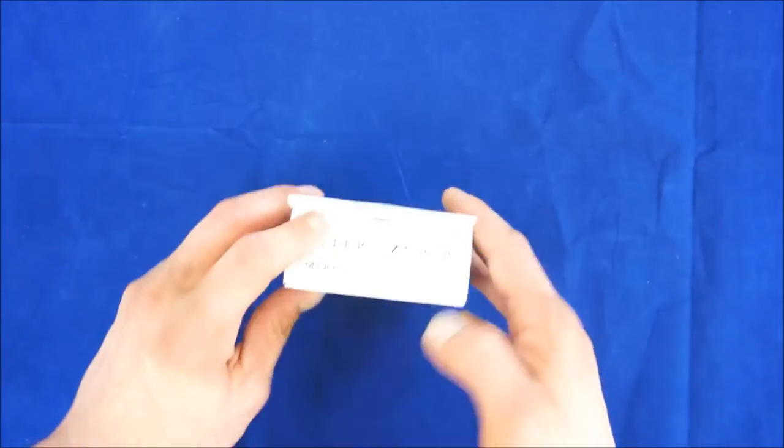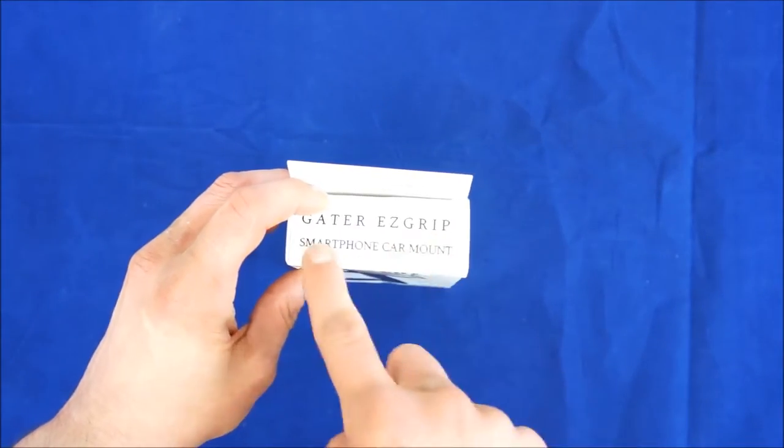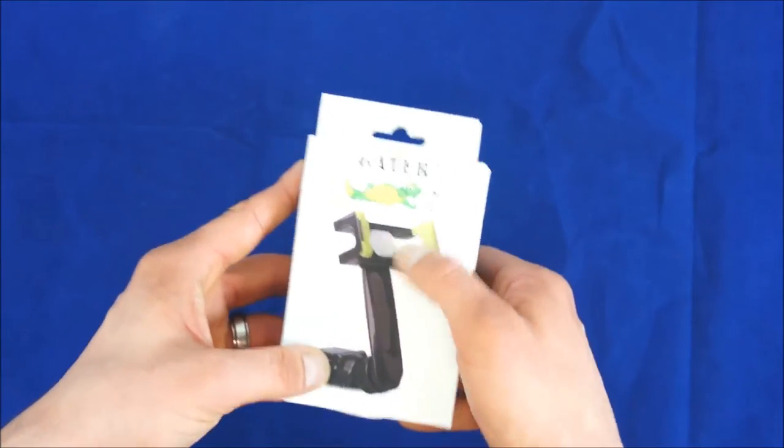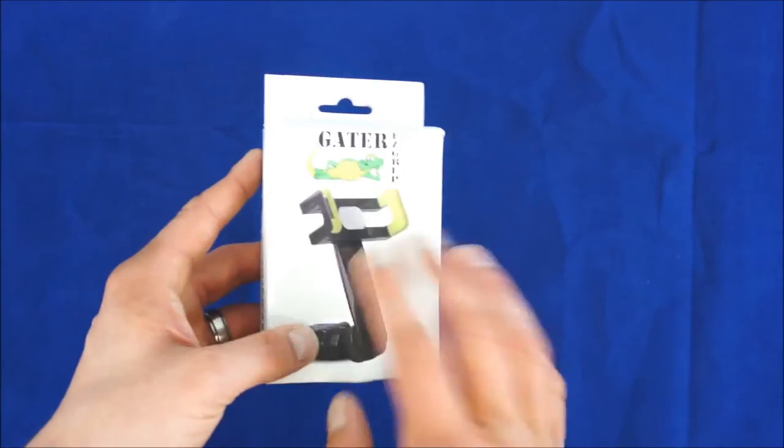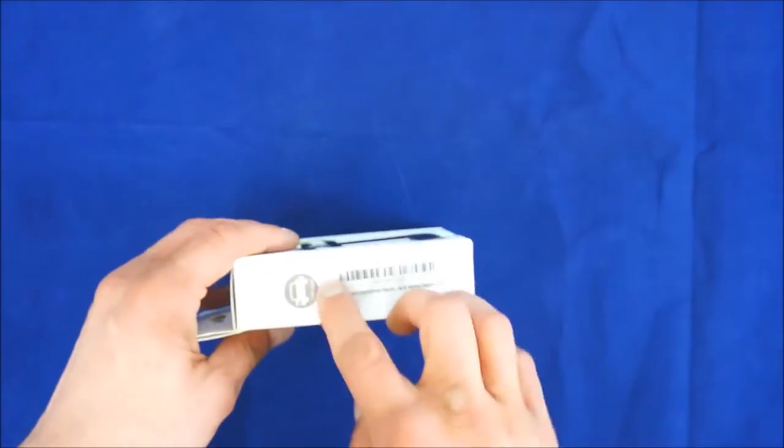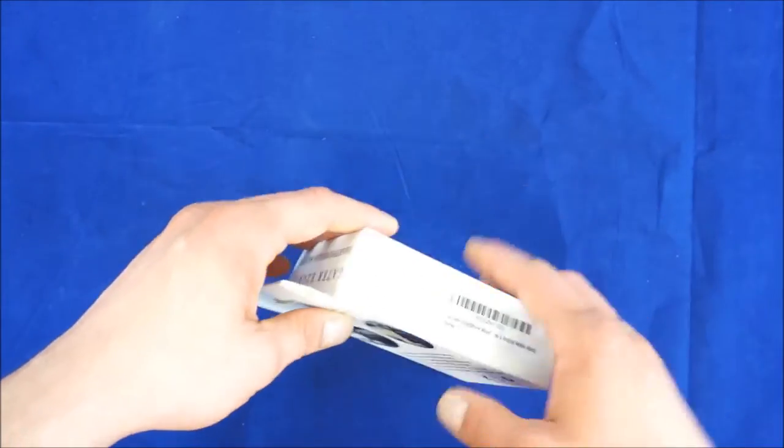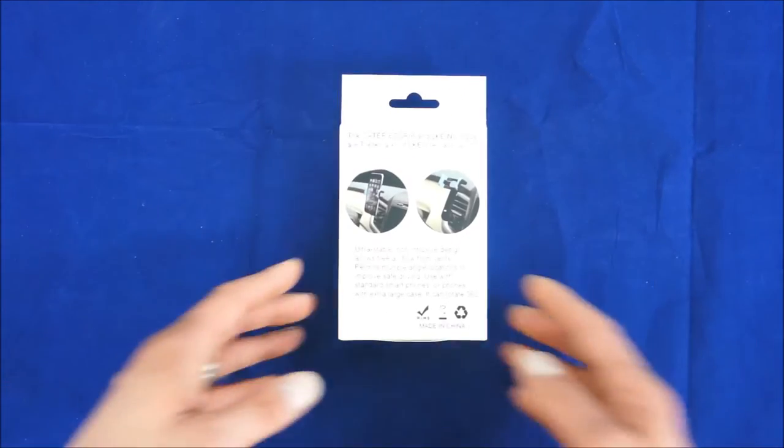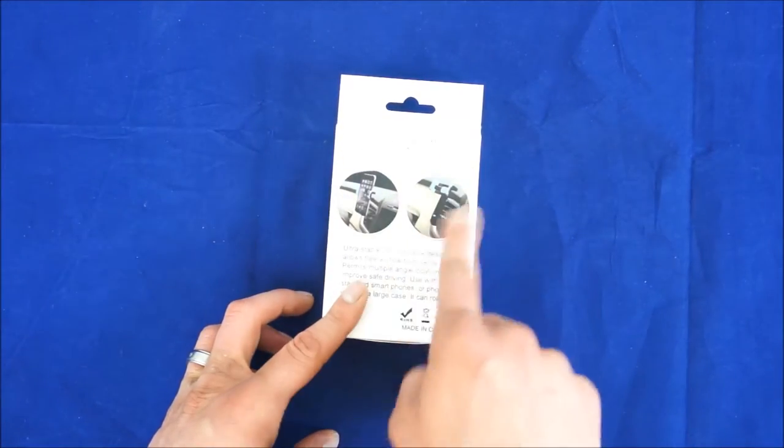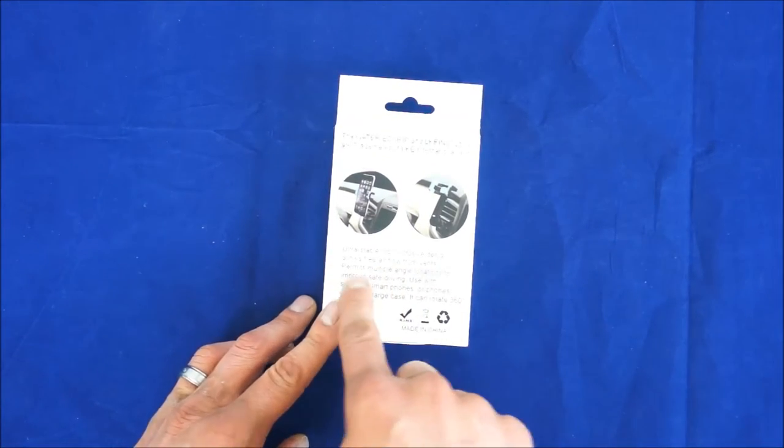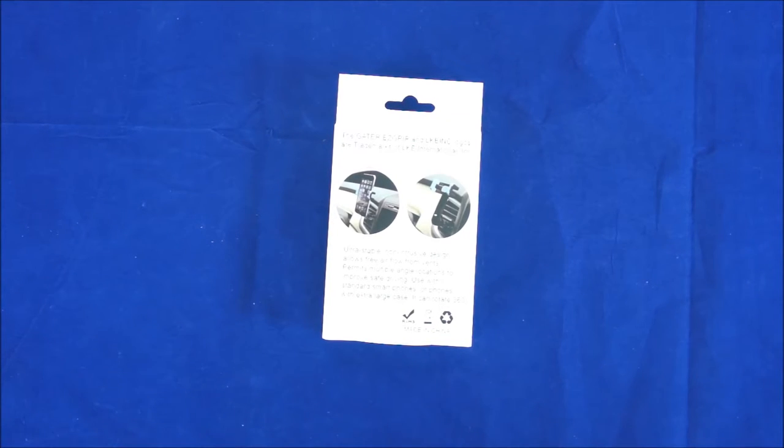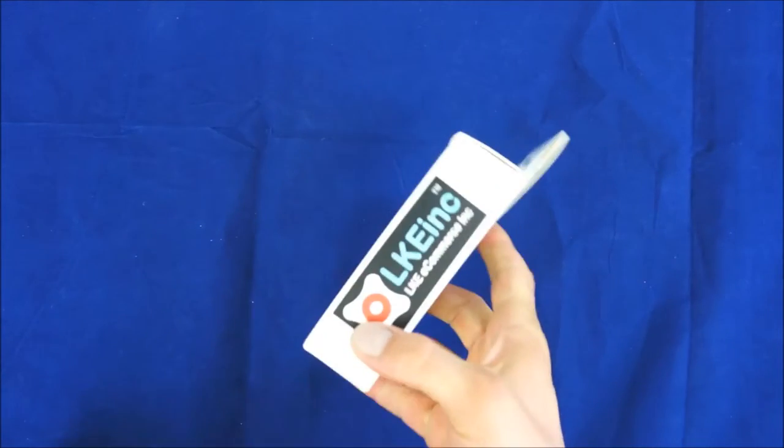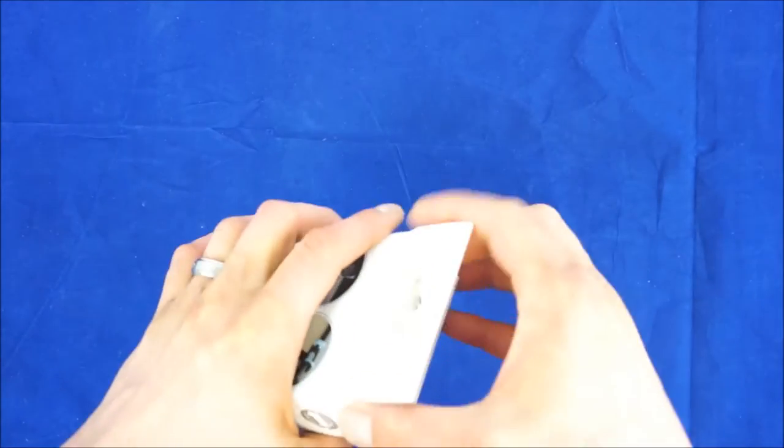Today we're going to start with the exterior of the packaging. On the top it says Gator EasyGrip Smartphone Car Mount. It gives you a picture of the product and it's an accurate representation. It has a UPC code, says for car, and tells you ultra-stable, non-intrusive design, allows free air flow from vents, permits multiple angle locations to improve safe driving. Uses standard smartphones or phones with extra large case, can rotate 360 degrees, and we'll find out the truth about that here in a second.